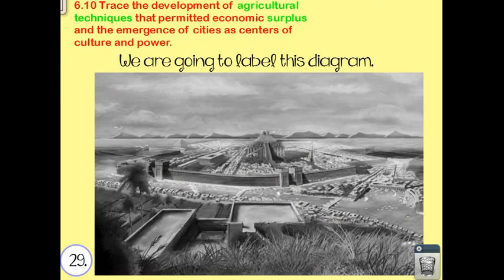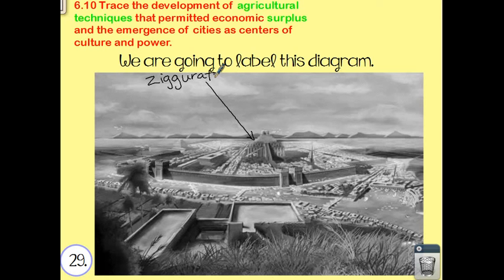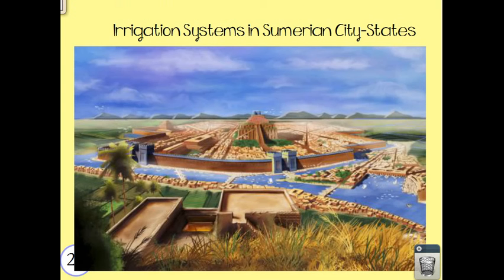The first thing you need to find is this picture in your spiral, and we are going to label it today. We're going to start with the easiest one that people have identified: what is this? A ziggurat. So let's go ahead and label it. If you want to label yours a little bit outside the picture, I'll show you mine — you can draw the line outside the picture as well. I'm going to switch to the color version because it's a little bit easier to see. We're going to label this: ziggurat.